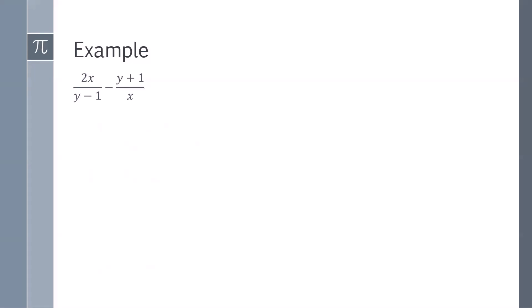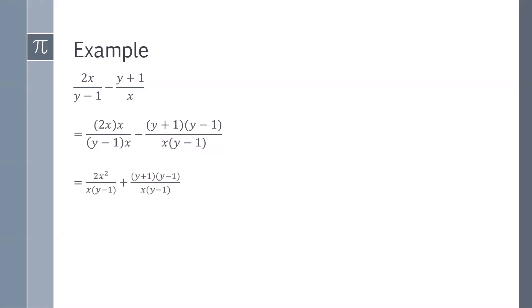Another example to simplify: 2x over y minus 1 minus y plus 1 over x. Our denominators are different, so we multiply the first fraction top and bottom by x and the second fraction top and bottom by y minus 1. We get 2x squared over y minus 1 times x minus y plus 1 times y minus 1 over x times y minus 1. Now with a common denominator of x times y minus 1, we add the numerators to get 2x squared plus y plus 1 times y minus 1, which distributes and simplifies to 2x squared plus y squared minus 1 divided by x times y minus 1.